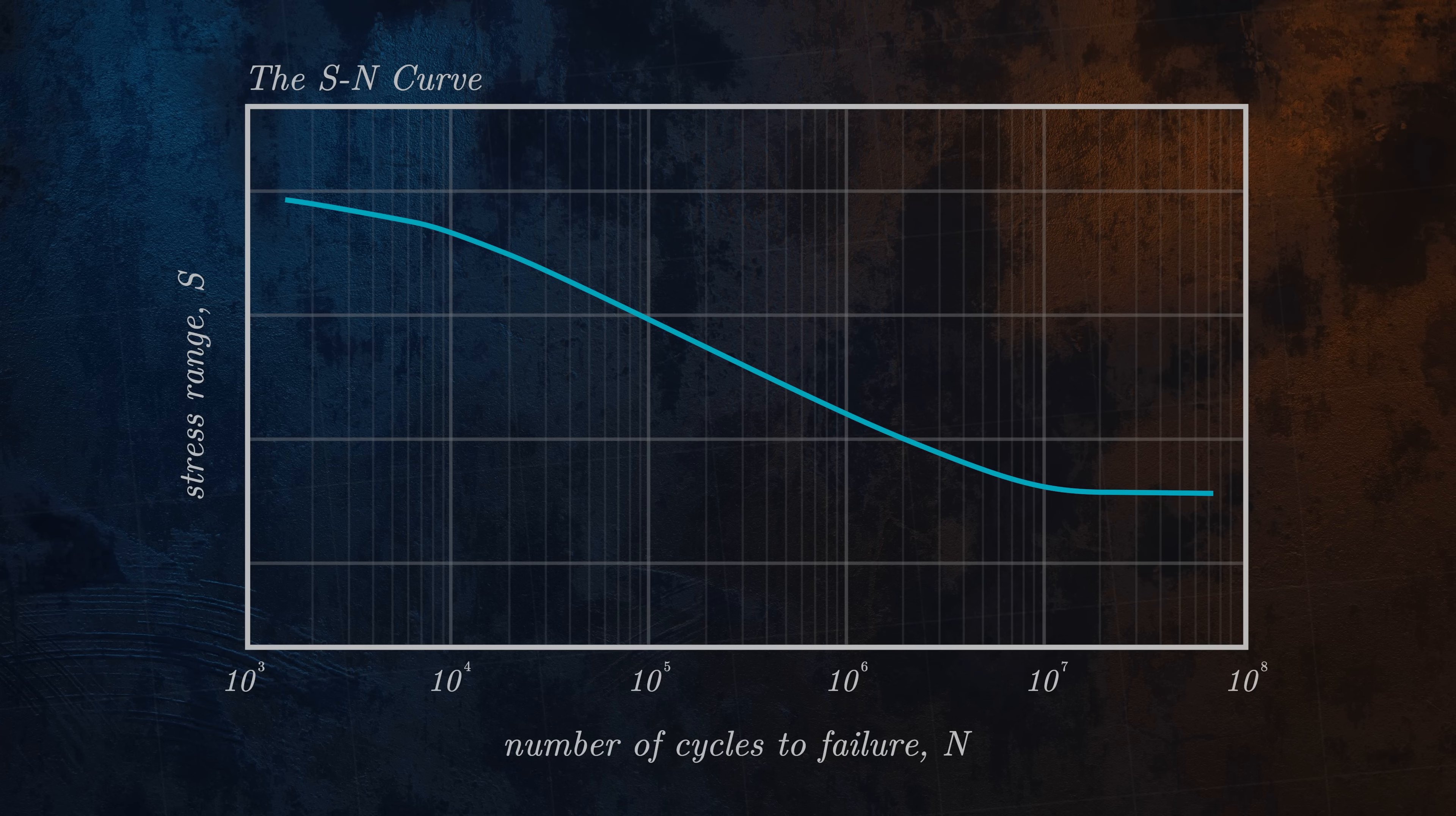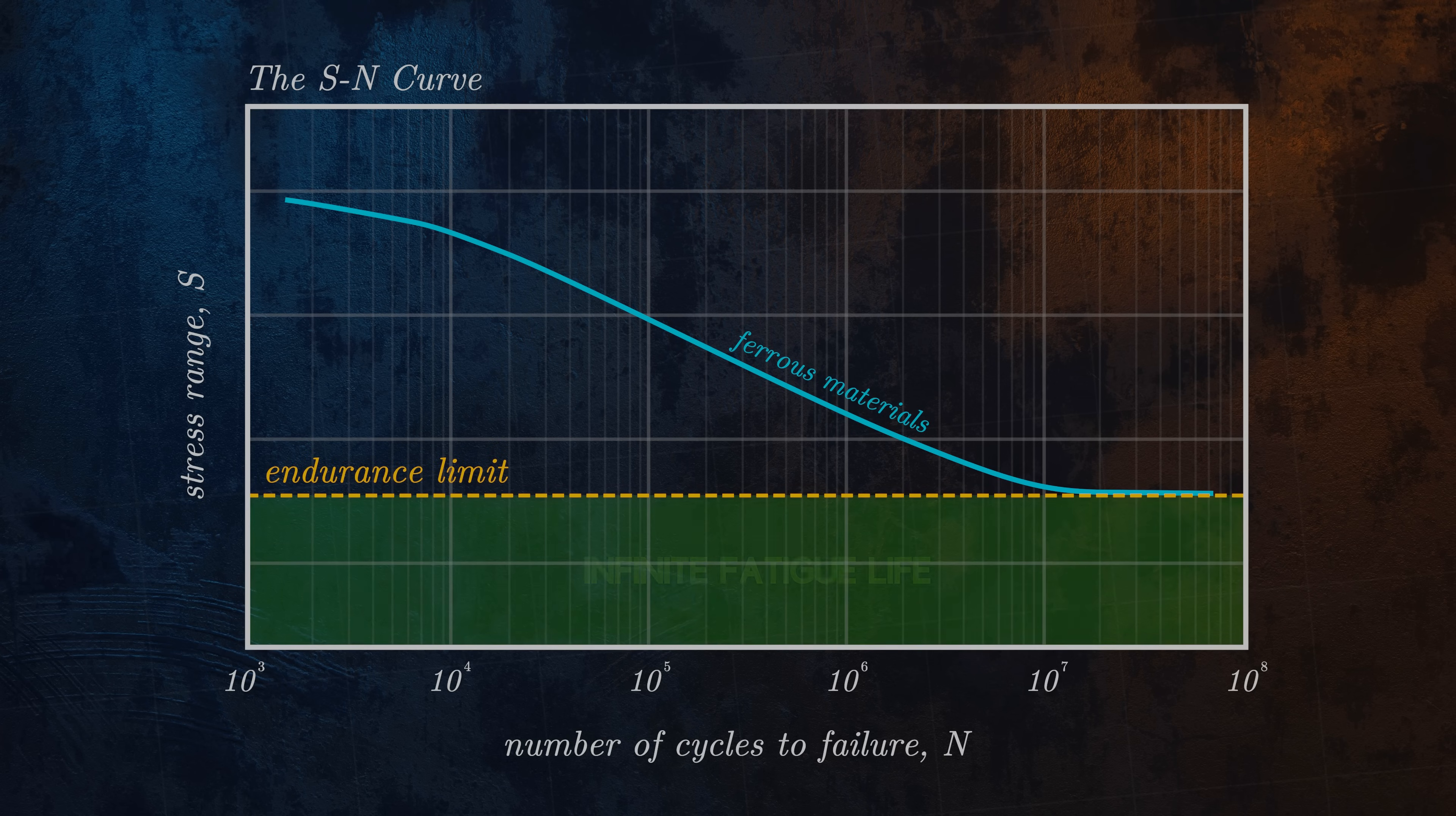For some materials, and in particular for ferrous materials, it is important to note that the S-N curve at a very large number of cycles becomes a horizontal line. This is known as the endurance limit. Theoretically, the component could be cycled at stress ranges below this level forever, and it will never fail due to fatigue. This makes the endurance limit an important fatigue design parameter.